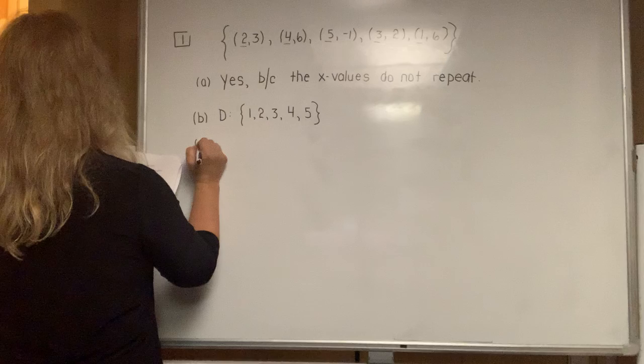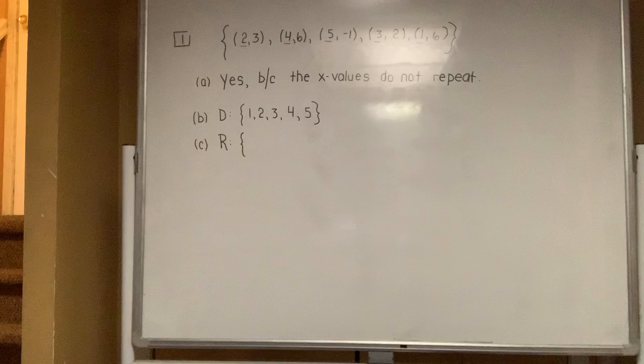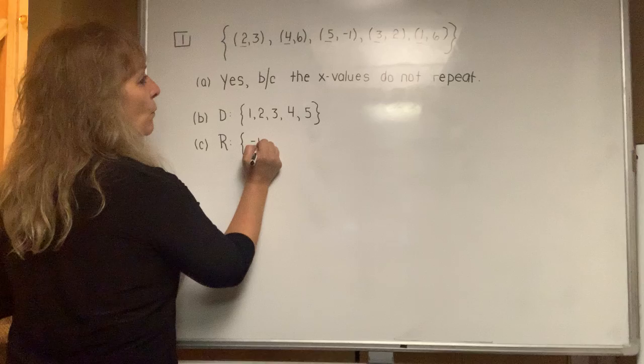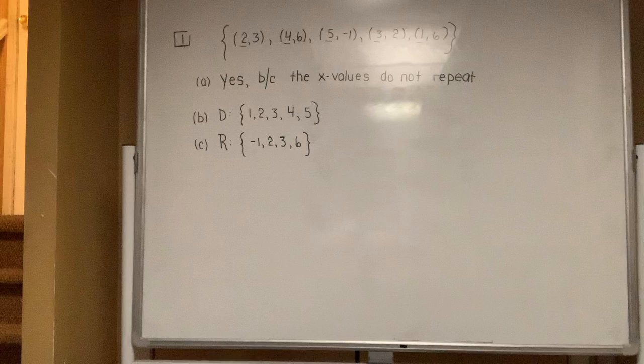When it comes to part C, it says, determine the range of example one. The range is the set of all y values. But you're going to put them in numerical order, and don't do any repeats. So the lowest y value is negative 1, then I see a 2, then I see a 3, but then I see a 6. And even though it repeats twice, you only write it down once inside the set.